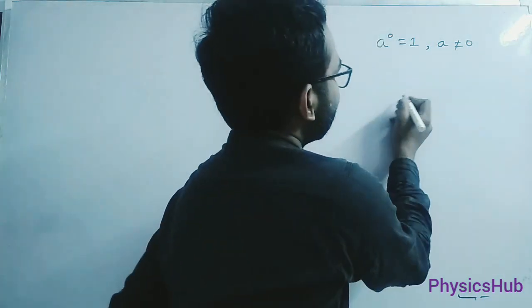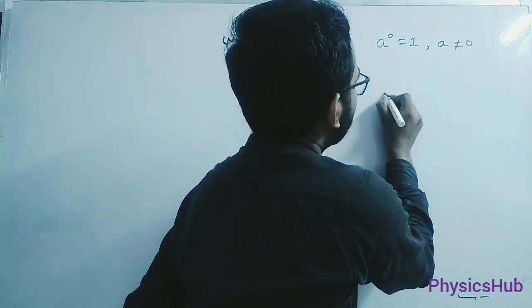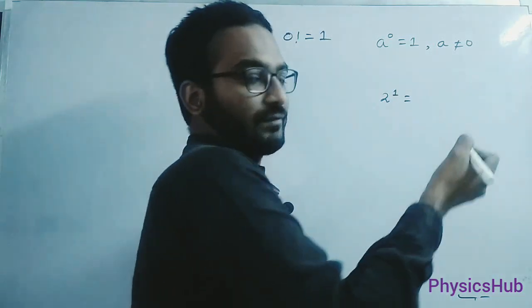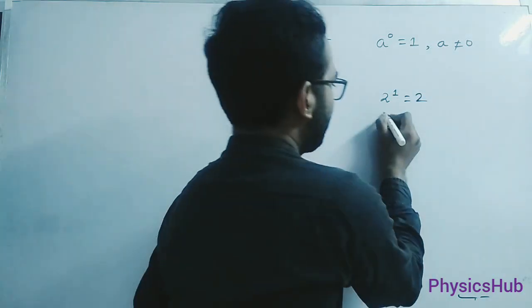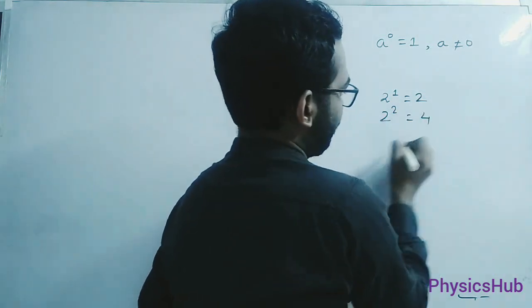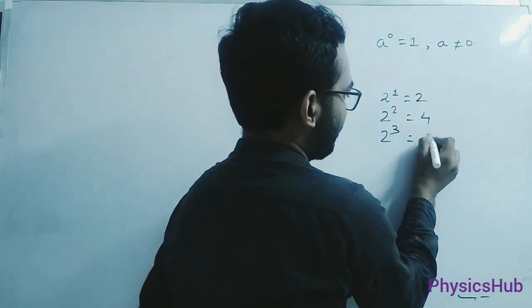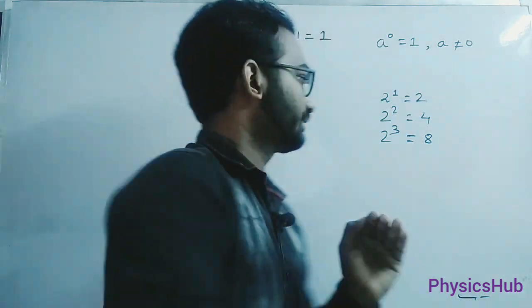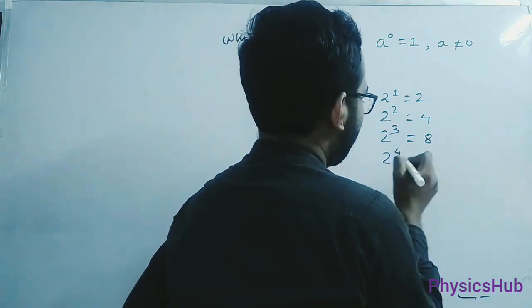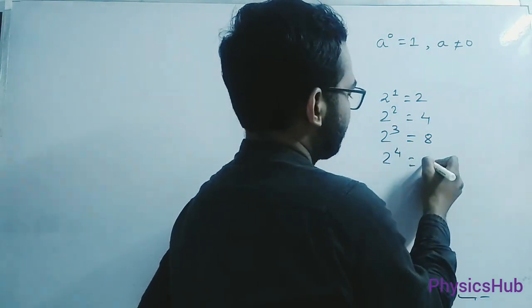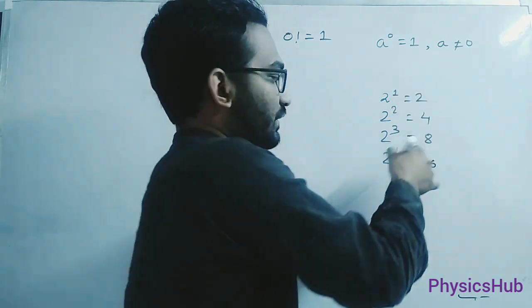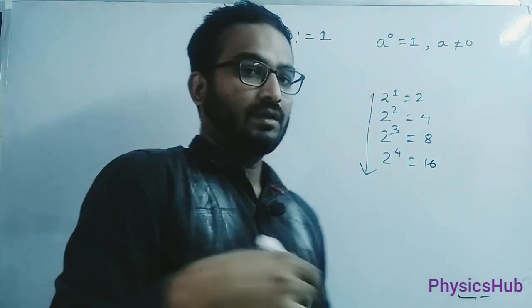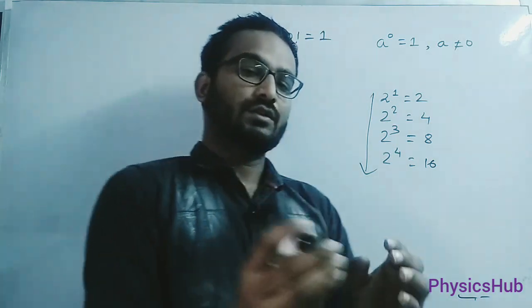So suppose I am telling you 2 to the power 1. What is the value of this? 2 to the power 2 is 4, 2 to the power 3 is 8. So when we are going in forward direction, the value of this power is increasing: 1, 2, 3, 4. It is increasing.